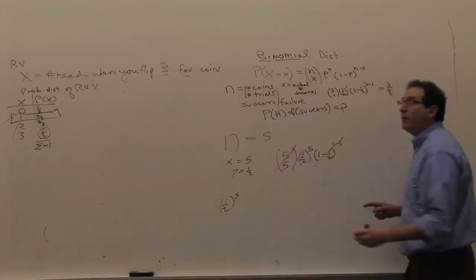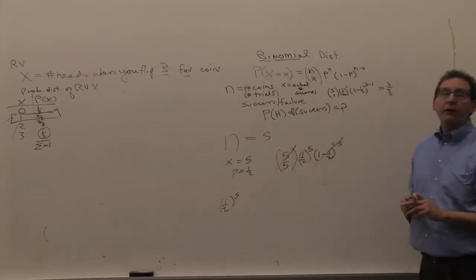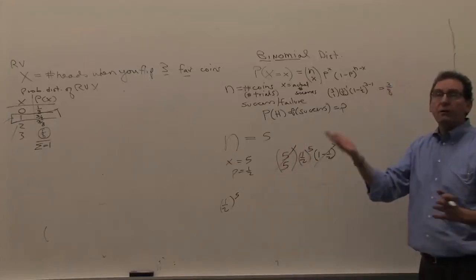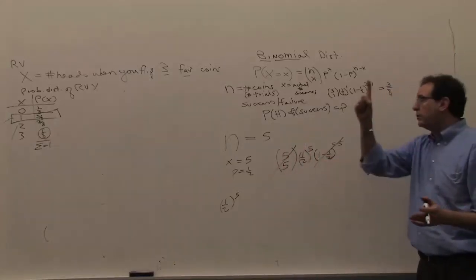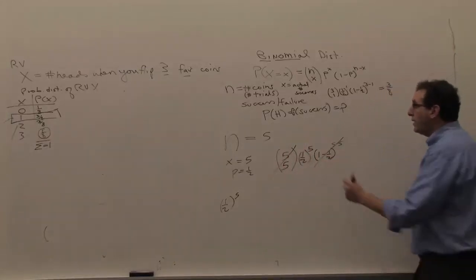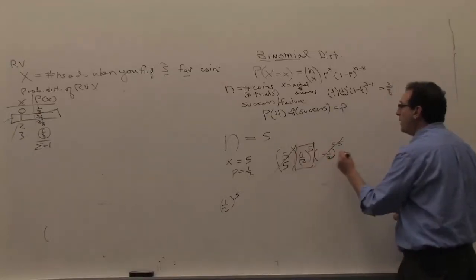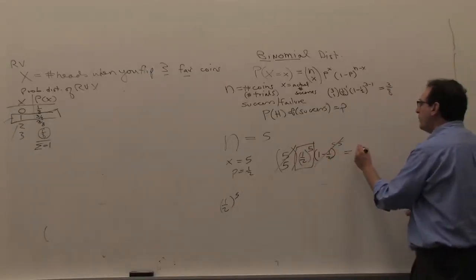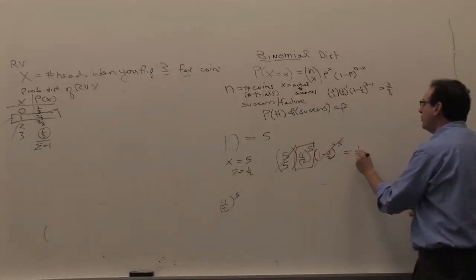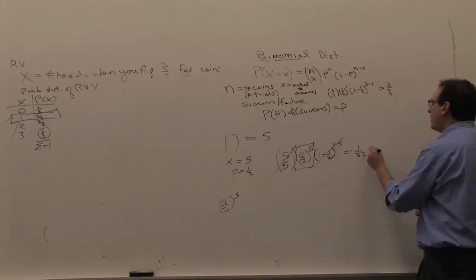Five choose five, when you play around with the factorials or use some common sense, we realize it also comes out to one. So if all is said and done, it comes out to one half to the fifth power, which is 1 out of 32, which is around 3%.